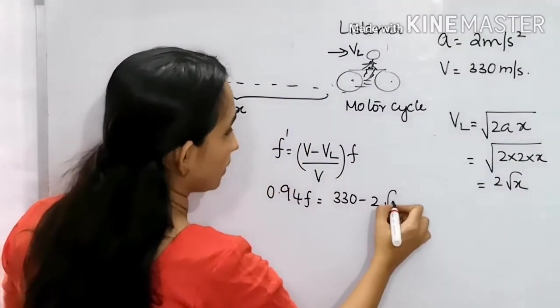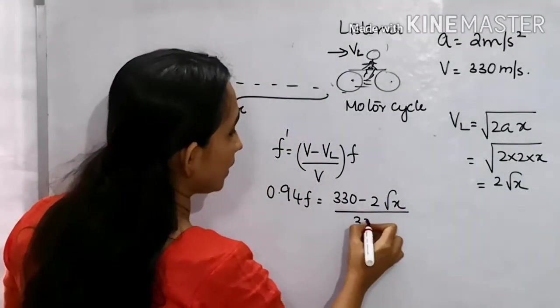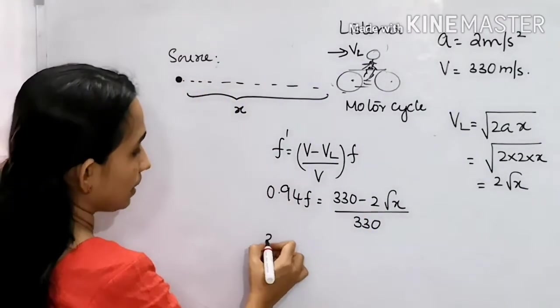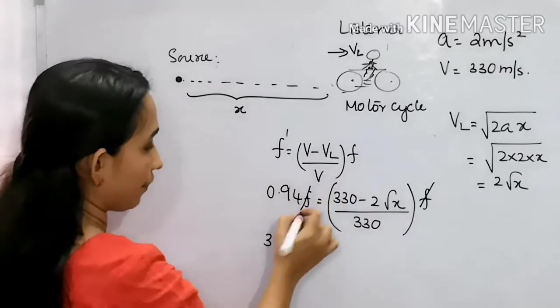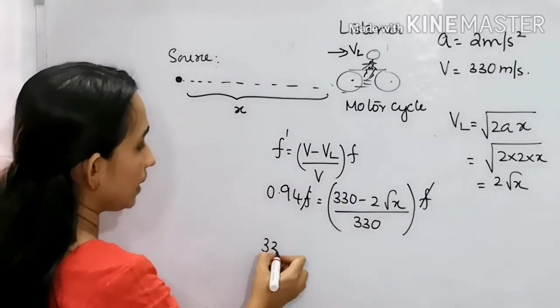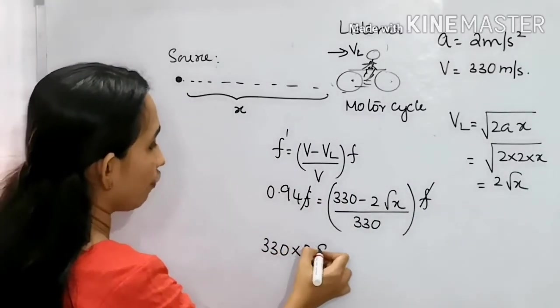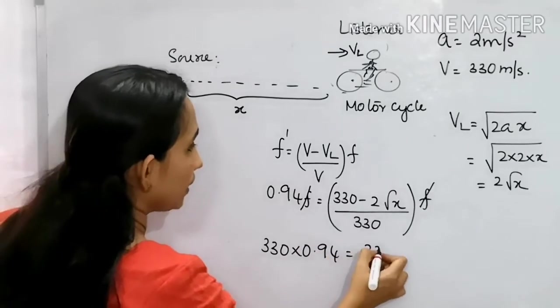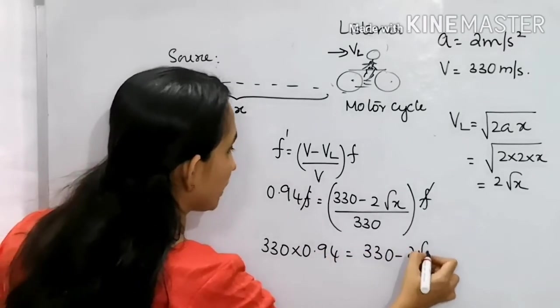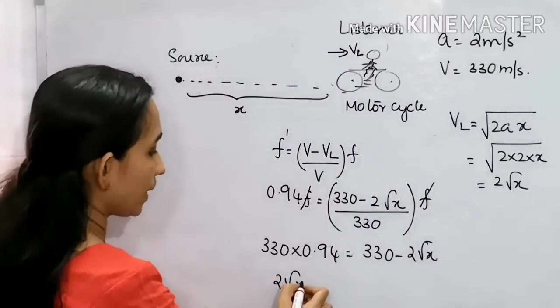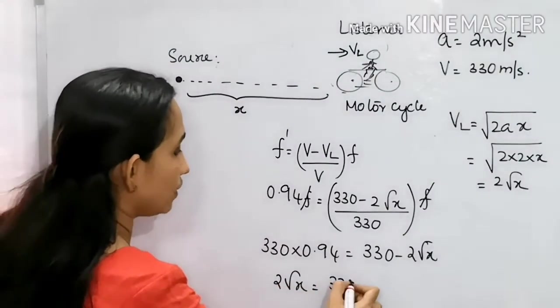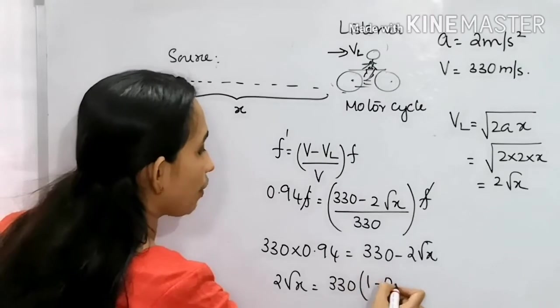Then, 2 root x divided by 330. I did cross-multiply. This is 330 into 0.94 equals 330 minus 2 root x. Now, we can rearrange 2 root x.